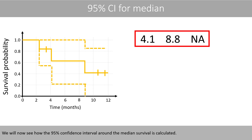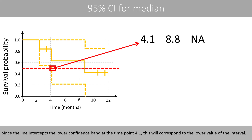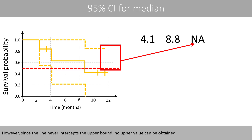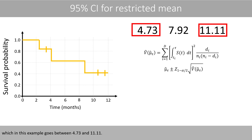We'll now see how the 95% confidence interval around the median survival time is calculated. Since the horizontal line at 0.5 intercepts the survival curve at time point 8.8, the median survival time is 8.8 months. Since the line intercepts the lower confidence band at time point 4.1, this corresponds to the lower value of the interval. However, since the line never intercepts the upper bound, no upper value can be obtained.